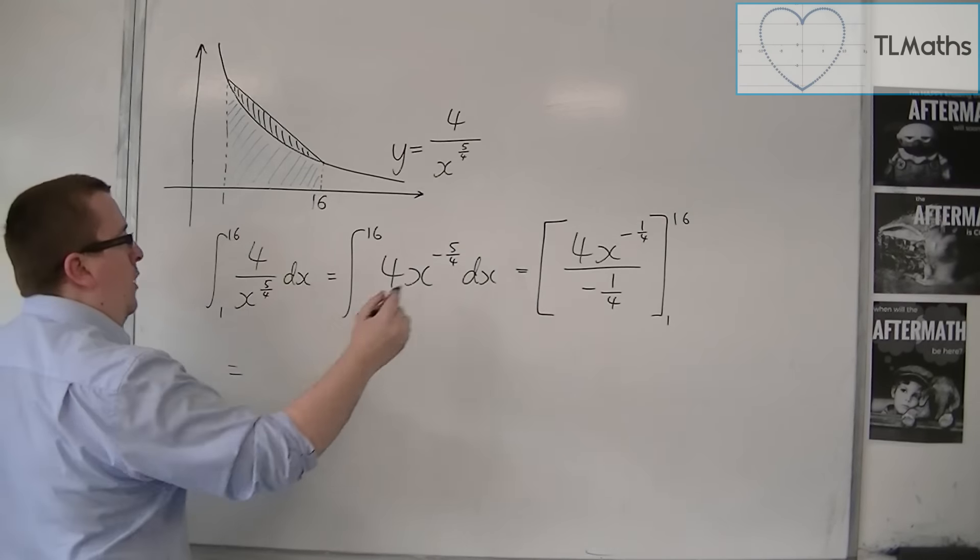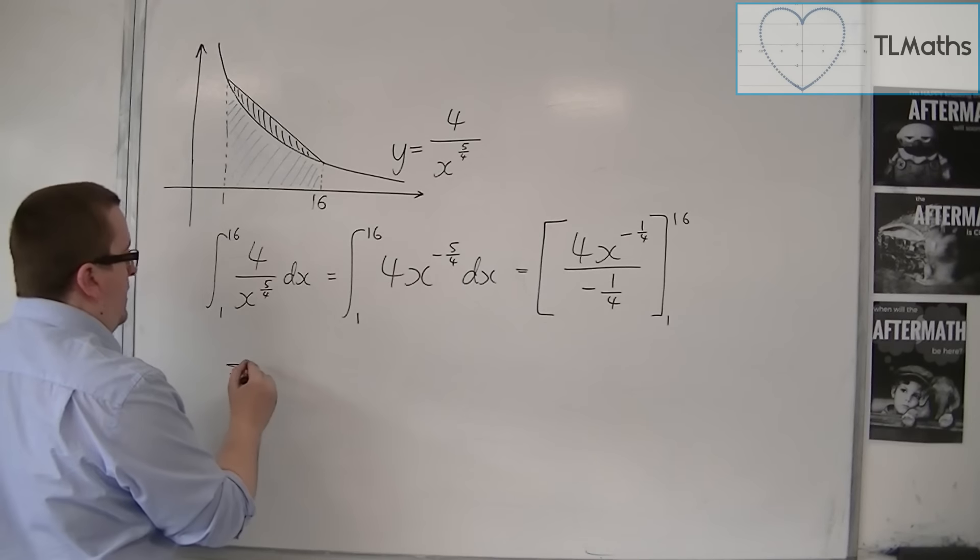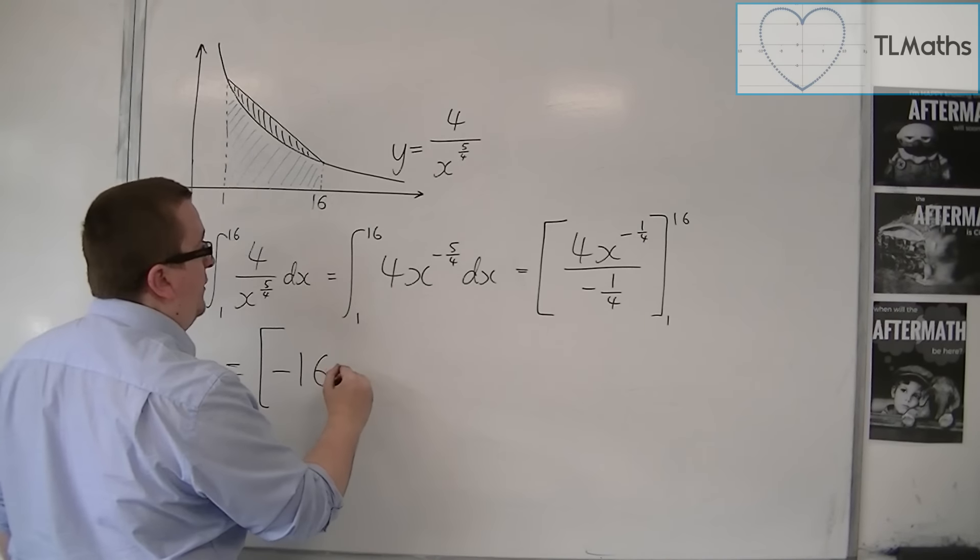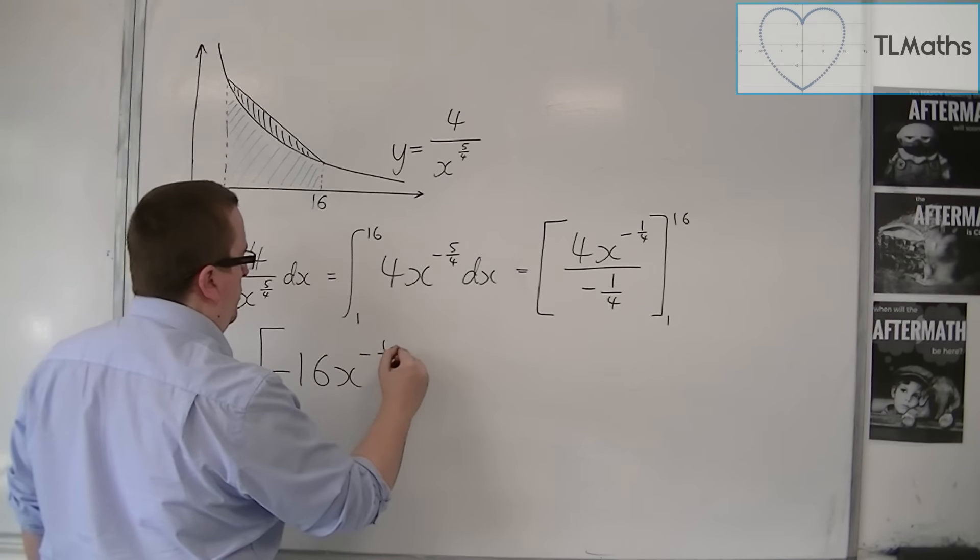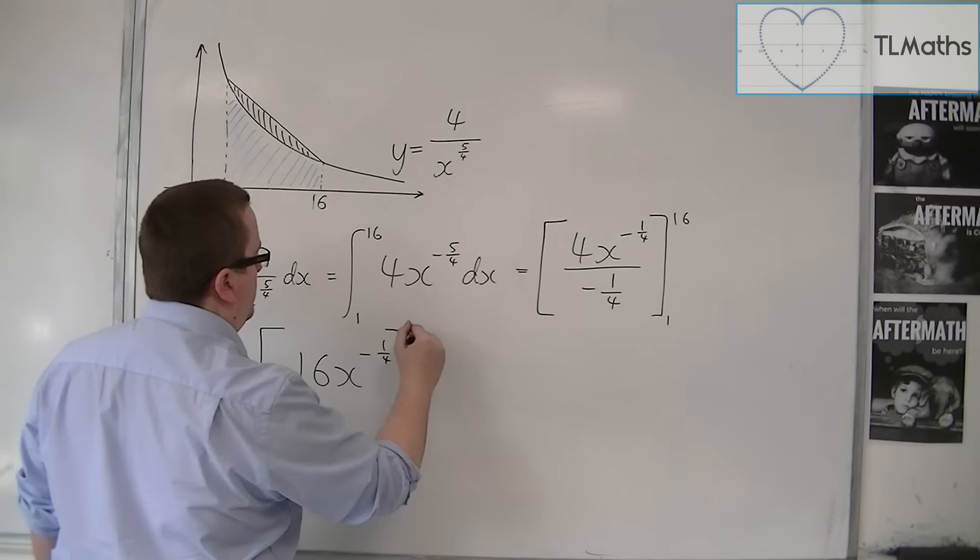Now, 4 over minus a quarter is minus 16. So I'm going to write that as minus 16 x to the minus a quarter, evaluated between 1 and 16.